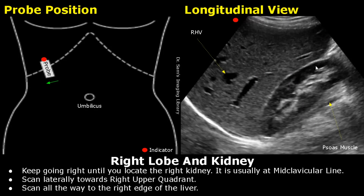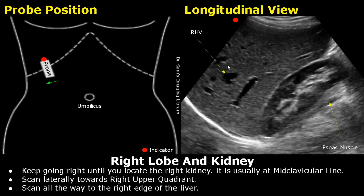Keep going right along the costal margin until you can see the kidney — usually it is seen at the mid-clavicular line. This is the right lobe. This is the right hepatic vein. We can see both the upper and lower poles of the kidney. This band is the psoas muscle. Scan all the way to the right edge of the liver. If needed, ask the patient to take a deep breath — this will push the liver below the ribs.